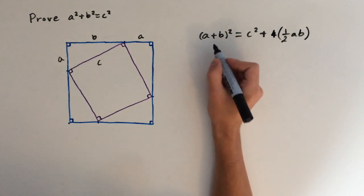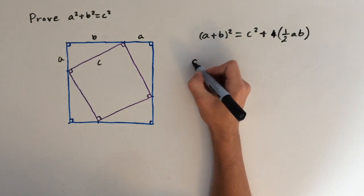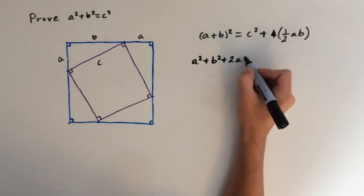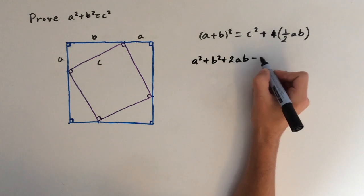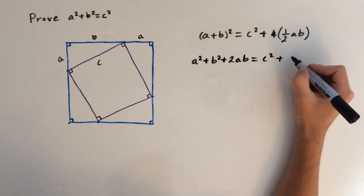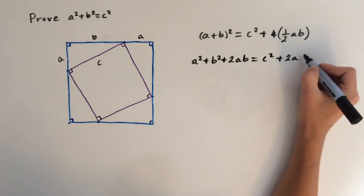So now let's expand these brackets here. This gives us A squared plus B squared plus 2AB. And this equals C squared plus four times a half is just two, so this will be plus 2AB.